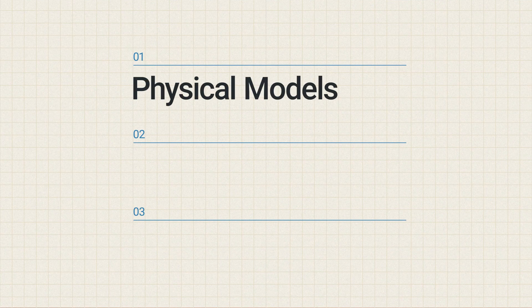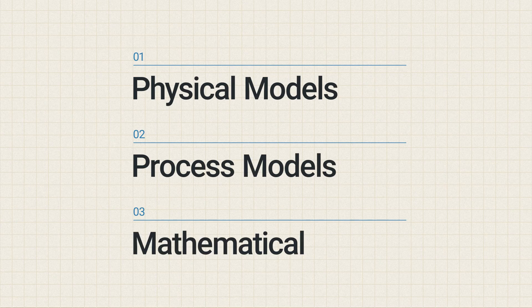So what do we mean when we say modeling and simulation? Let's break it down first by looking at models and then simulations. There are three categories of models: physical models, process models, and mathematical models.